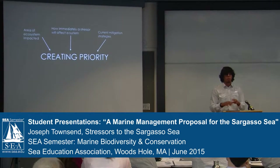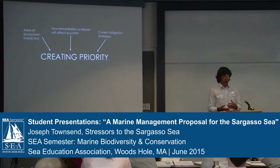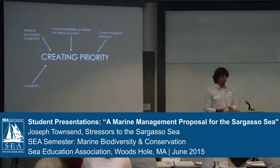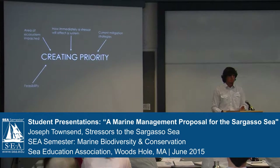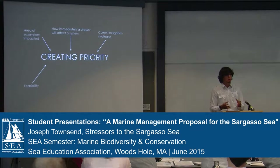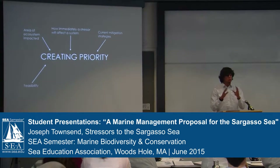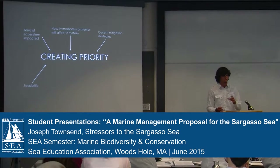Next, we want to talk about what is happening at the current moment to mitigate these potential stressors. Do we know what's going on? Do we know what we should do? Do we know what we need to do? Are we doing it currently? Next, an important point: political feasibility. We've heard from the governance and stakeholders section. We want to talk about an area that is beyond national jurisdiction for a large part of the Sargasso Sea, and that's going to be a factor in how we approach these potential stressors.